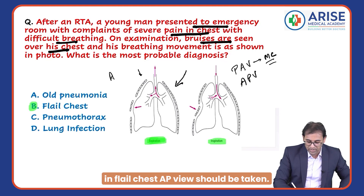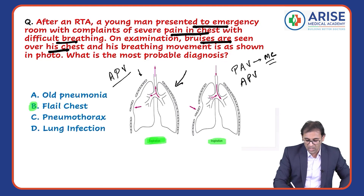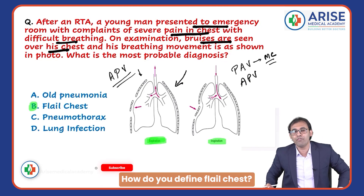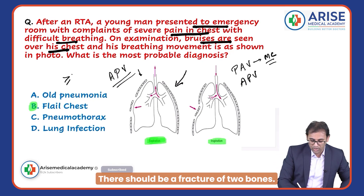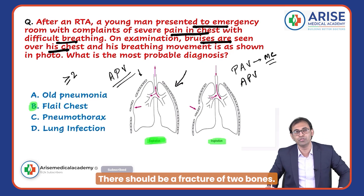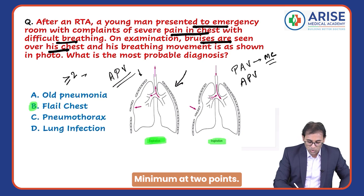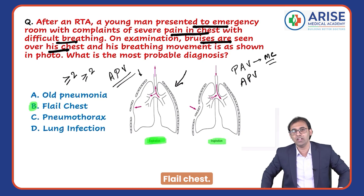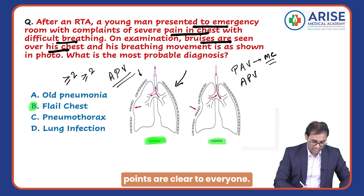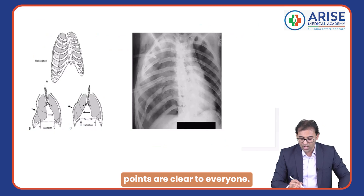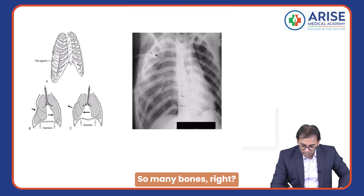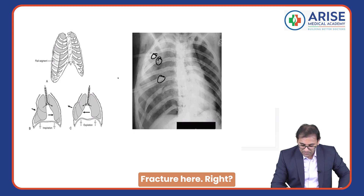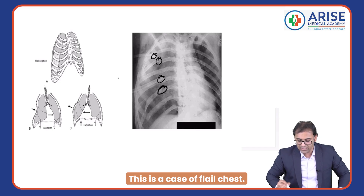The AP view is done in any condition where the patient cannot stand — if the patient is in a coma, in the ICU, or has flail chest. So remember, in flail chest the AP view should be taken. How do you define flail chest? There should be a minimum fracture of two bones at minimum two points. Look at the X-ray here — so many ribs fracture here. This is a case of flail chest.